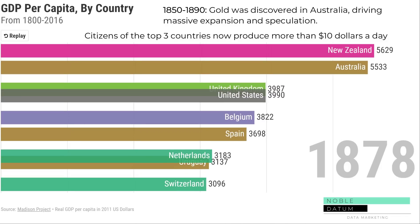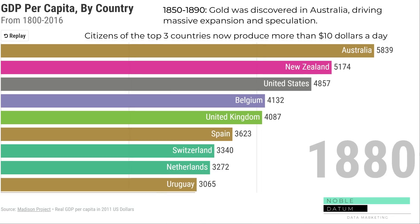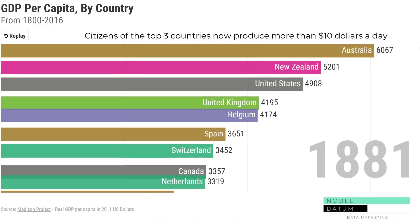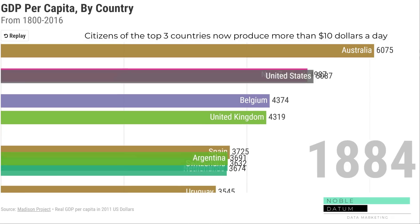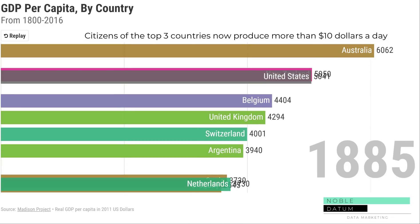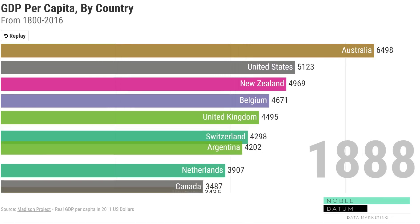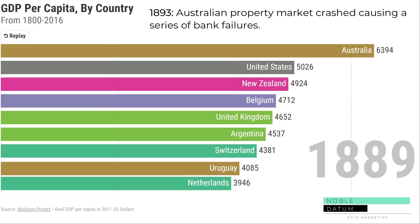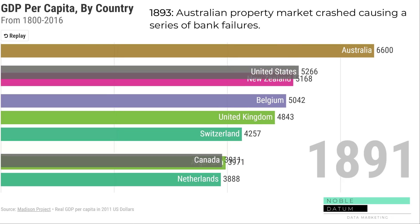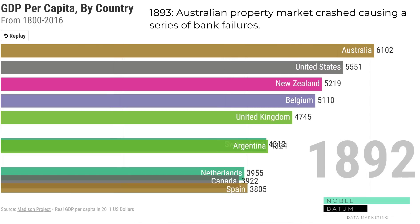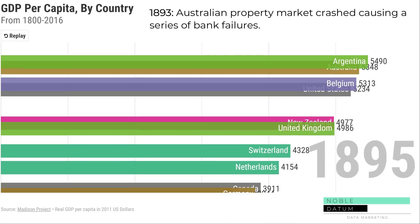This 60-hour week is considered luxurious, because in Belgium the average employee works over 70 hours a week to produce 23% less in economic activity. In 1890, Australia's property boom collapses. Australia's Federal Bank falls, and sets off a series of bank failures throughout the continent.